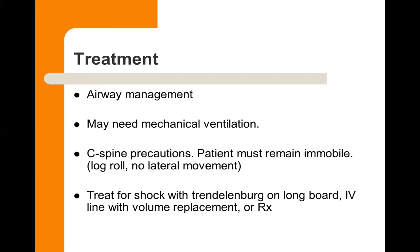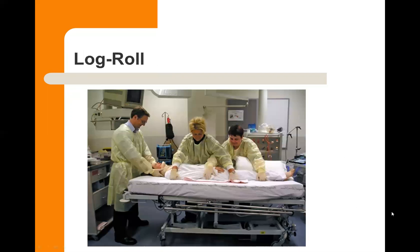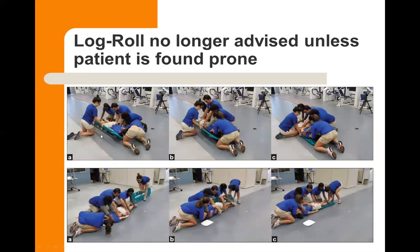C-spine precautions: we make sure the patient remains immobile — log roll, no lateral movement. We treat for shock, possibly with IV fluid replacement since the body tends to vasodilate and blood pressure drops. The person at the head of the bed is always in charge of C-spine, and everything goes on their command. Oftentimes RTs are at the head of the bed — even with a T8 or L1 injury where the patient is still breathing, we'll still be in the trauma suite performing C-spine management.